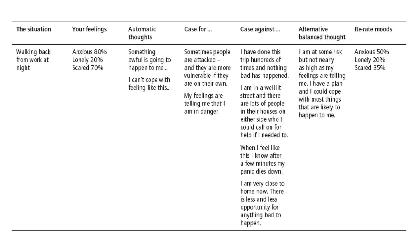As an example, this is something called an automatic thought record, which is a common tool used in cognitive therapy to help people go through the process of identifying their ABCs of behavior. This thought record was completed by an individual with a high level of anxiety symptoms. They described a situation walking home from work where they felt highly anxious, a little lonely, and scared. Their automatic thoughts were that something awful is going to happen and that they can't cope — an example of catastrophizing.